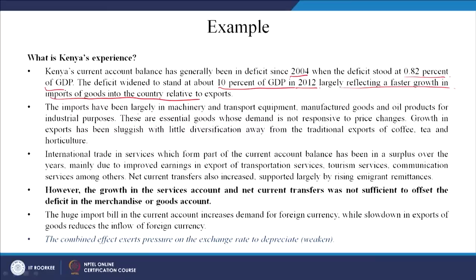The imports have been largely in machinery and transport equipment, manufactured goods, and oil products for industrial purposes. These are essential goods whose demand is not responsive to price changes - thus the elasticity is very poor, meaning they would not respond to price changes. Growth in exports has been sluggish. If after the import of such goods the exports would have risen, there would not have been much of a problem, but exports did not grow either.